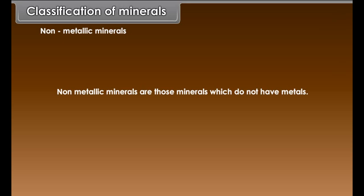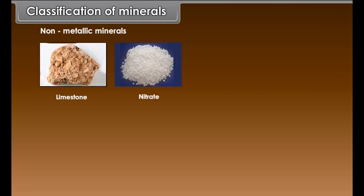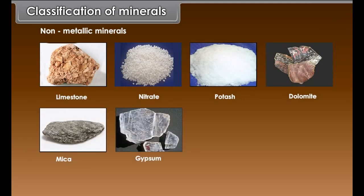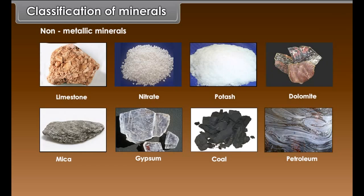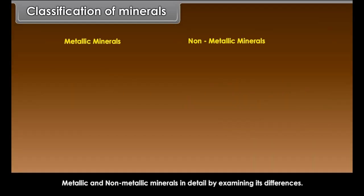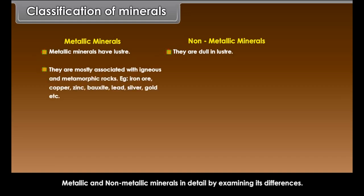Non-metallic minerals are those minerals which do not have metals. Non-metallic minerals are dull in luster. Metallic minerals are mostly associated with igneous and metamorphic rocks. Examples include iron ore, copper, zinc, bauxite, lead, silver, gold, etc.